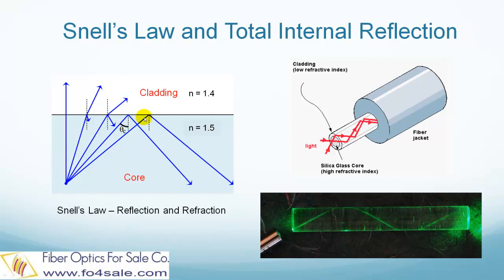When the light enters the core at an angle greater than θc, it will be bounced back and forth at the interface of the core and cladding and travels very long distance along the fiber with very low loss. This picture visually shows the total internal reflection process.